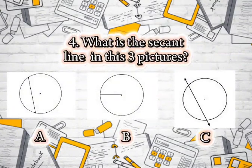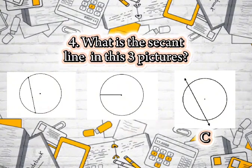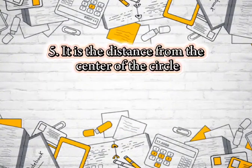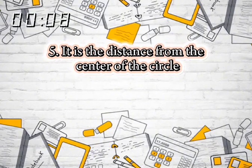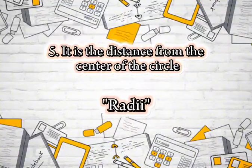What is the secant line in these three pictures? It's the letter C. Number five. It is the distance from the center of the circle. It's radii.